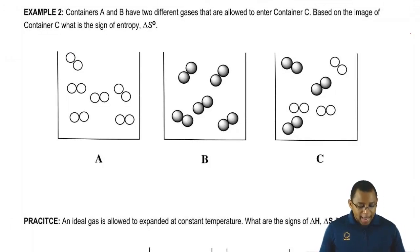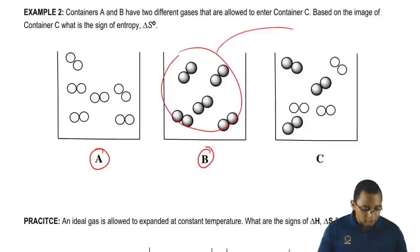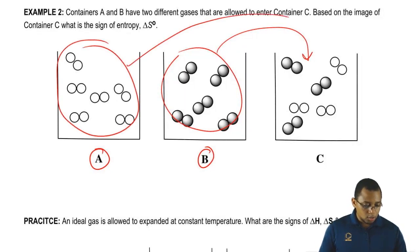Example 2 says we have container A, which is this one, and container B. They have two different gases and we allow both of these gases to funnel into a new container, container C. Just to let you know it's not drawn to scale. All these gases in here are in here. Even though I don't show all of them, consider all of them to be in there. All the gases here are also in here.